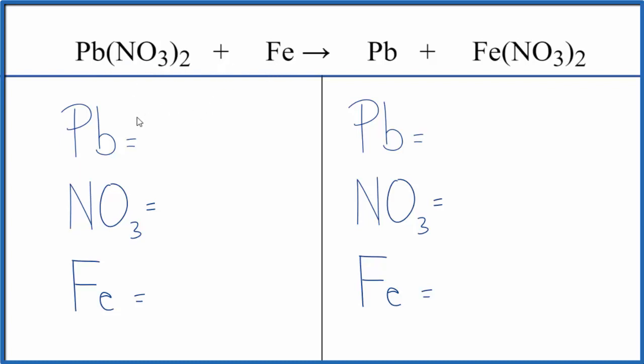Let's count the atoms up on each side. We have Pb, one of those, and then NO3 is a polyatomic ion. It's called the nitrate ion. We have it here, and it stays together in the reaction.